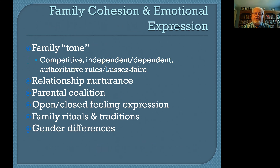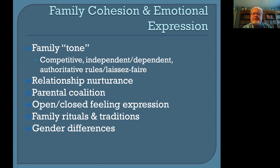Looking at the family's cohesion and emotional expression is also an important aspect of identifying what's happening in the family. Cohesion is about the family's connectedness and their ability to see themselves as together, as part of a family. Notice the family tone: is it competitive, independent, dependent, or a combination? Are rules more authoritative or laissez-faire? How do they nurture one another? What are the strengths and limitations of the parental coalition? Is feeling expression open or closed? What are family rituals and traditions, and how do gender differences influence togetherness and emotional expression?